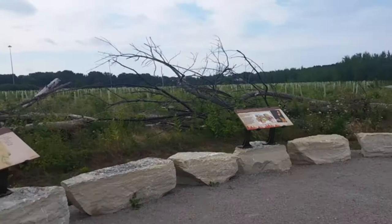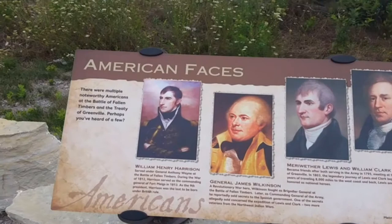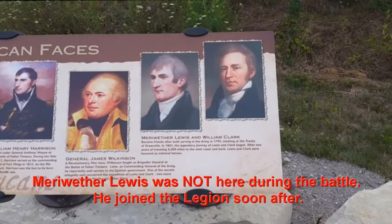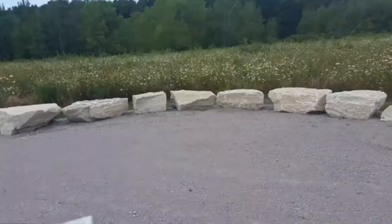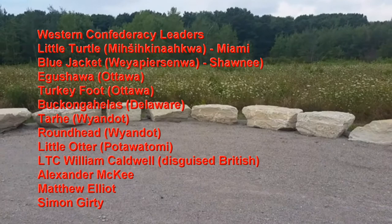William Henry Harrison eventually became president. And hey, these guys look familiar — they look like Lewis and Clark, and that's because they are Lewis and Clark. They were here. Some of the American Indian leaders here were Blue Jacket of the Shawnee, Little Turtle of the Miami, and Buckingahelas of the Delaware.